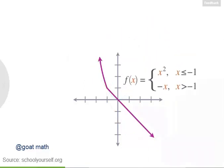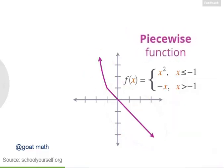So this is a graph of the function f of x. Because f of x is defined as two different pieces — an x squared piece and a minus x piece — this is called a piecewise function. Notice that this piecewise function is continuous. Although it's made up of two different pieces, you can still draw the function without picking up your pen. That's because x squared and minus x have the same value at x equals minus 1; both functions have an output of 1.